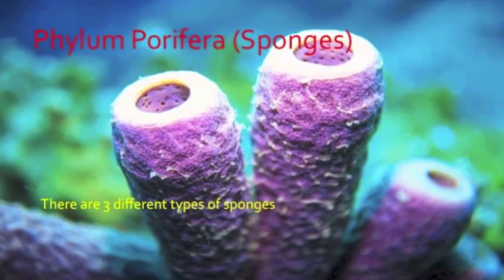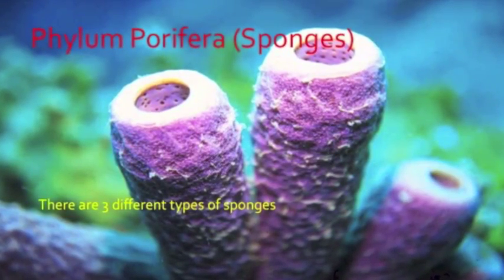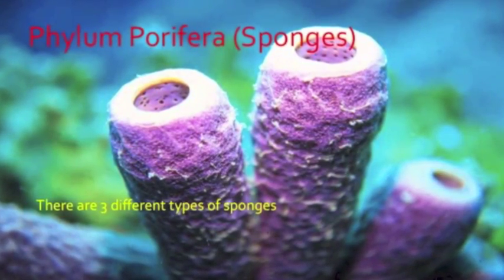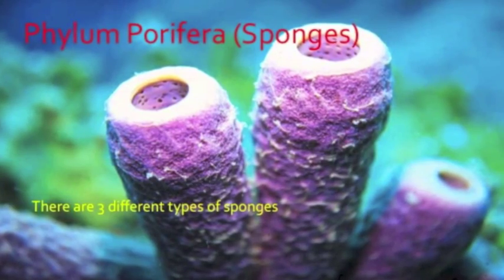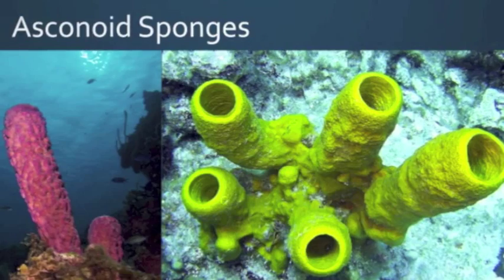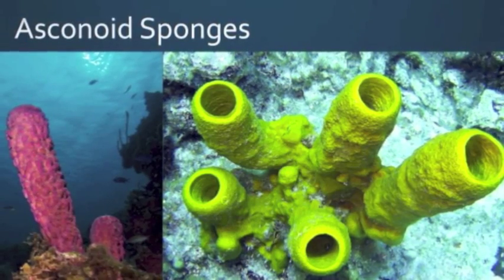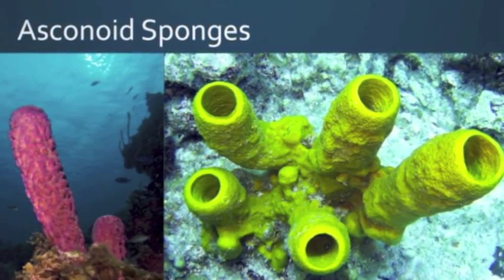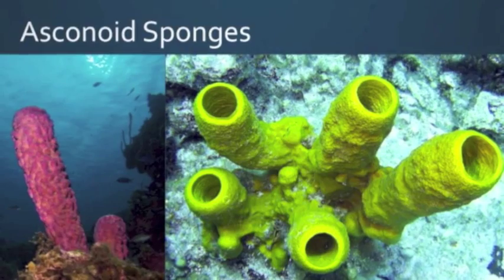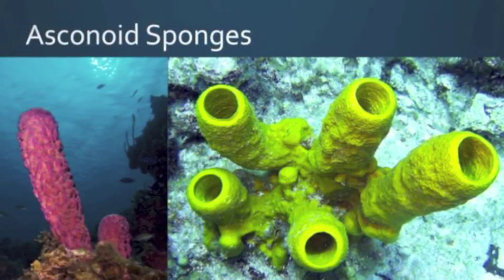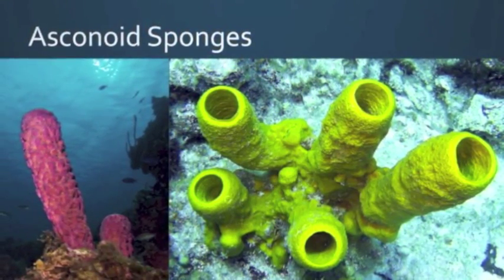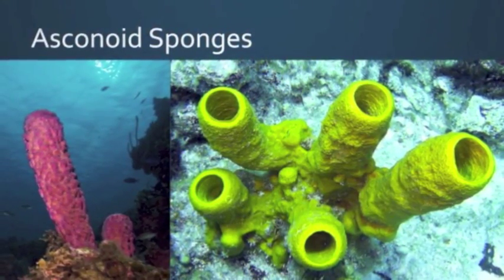There are three types of sponges: Asconoid, Syconoid, and Leuconoid. Asconoid sponges are the most primitive and simplistic in structure. They have radial symmetry and are tube shaped.